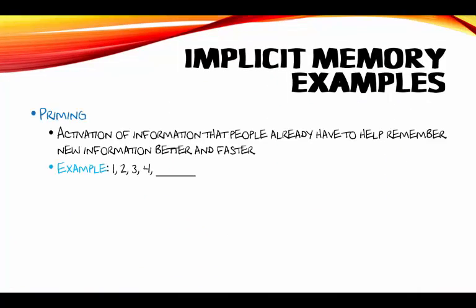Another good example of implicit memory, one that we'll see again in the next chapter, is priming. Priming is basically activating information that you didn't necessarily mean to — or that I can actually make you think of. For example, look at the screen: one, two, three, four, blank. What goes in the blank? Is there anyone who didn't think five? I didn't think the word pumpkin. I couldn't help myself but think of the number five, because I was primed by the other information already there.